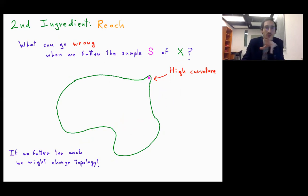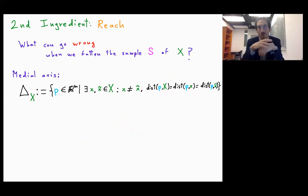So putting these two together, one can see this underlying formal object, which is the medial axis. So this is the set of points P for which there are two points in X.